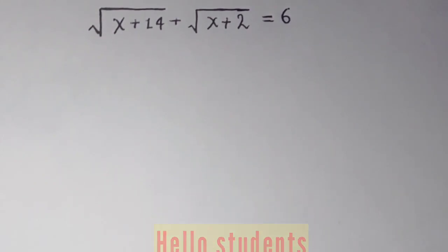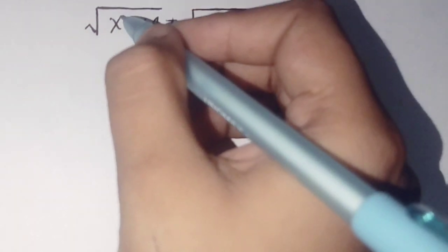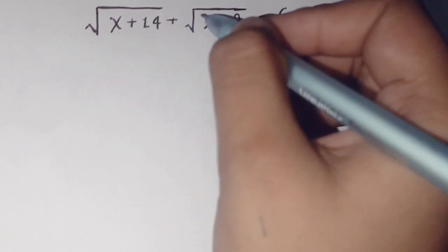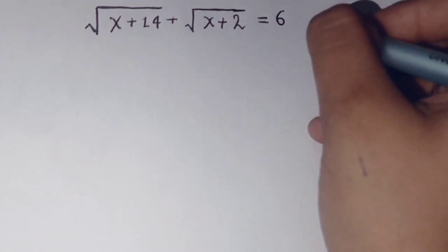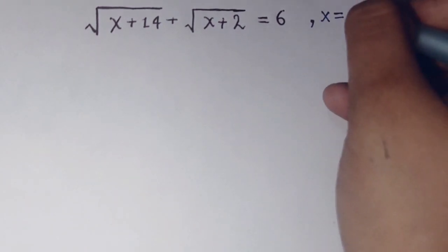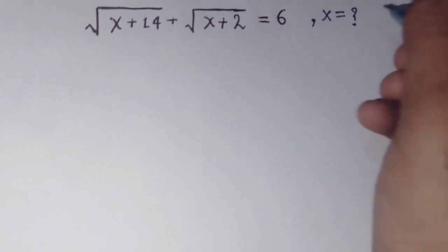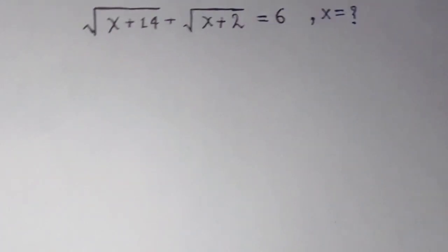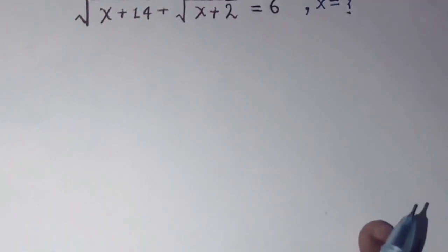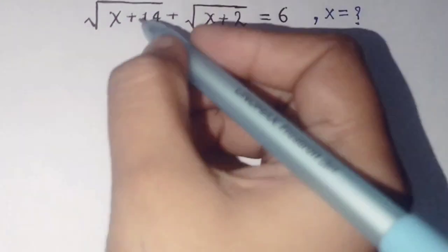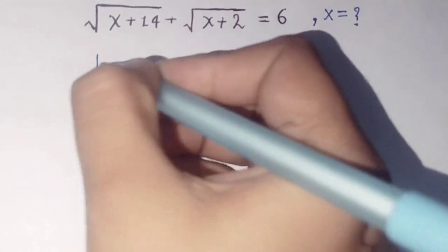Hello students, today in this video we are going to solve this question: square root of (x + 14) plus square root of (x + 12) equals 6, and find the value of x. This question looks so difficult, but I'm going to use a very short trick to solve this type of question.